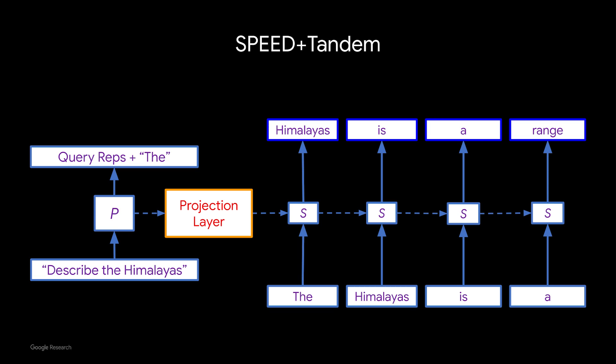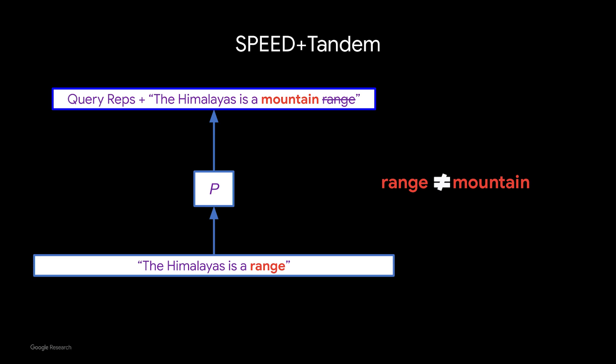For example, given the query 'describe the Himalayas,' the secondary model says the output should be 'Himalayas is a range.' After generating these four tokens, we pass them through the primary model, and the primary model says 'the Himalayas is' is a good set of tokens, but 'mountain' is what you should have instead of 'range.' So we have a mismatch at the fifth token — we backtrack and start generating new tokens from that point on. This ensures that the quality of this model is exactly the same as that of the primary model.